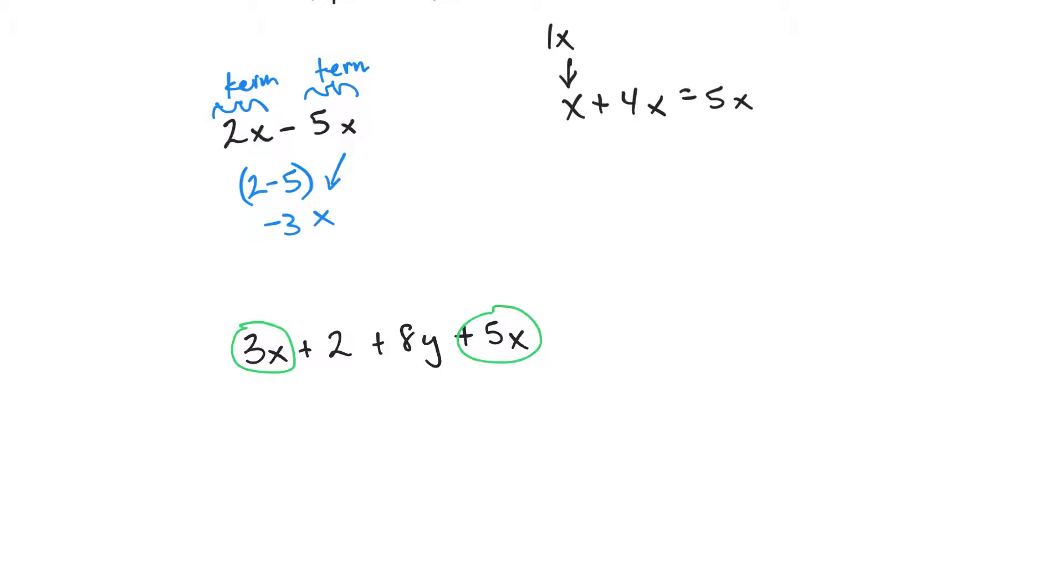So if I were to rewrite this, I could, using the commutative property, I could slide these around. So I could rewrite this as 3x plus 5x. I could bring them close together. Then I could say plus 8y plus 2. So I wrote down all the same stuff. I just kind of slid them around.